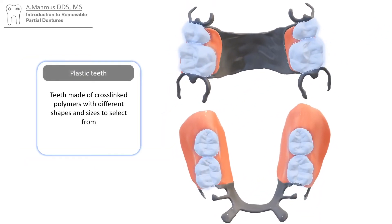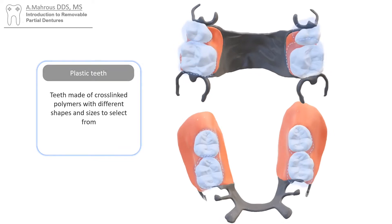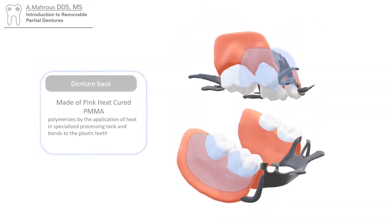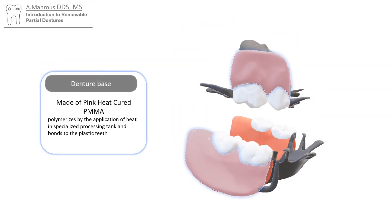The artificial plastic teeth are made out of cross-linked polymer, with different shapes and sizes to choose from. The denture base is made out of pink heat-cured PMMA, or polymethyl methacrylate, and polymerizes by the application of heat in a specialized processing tank.